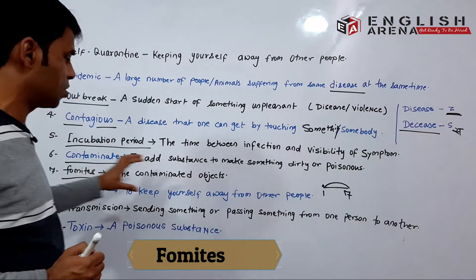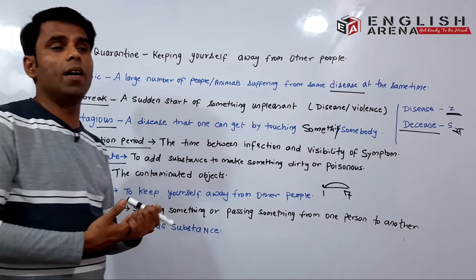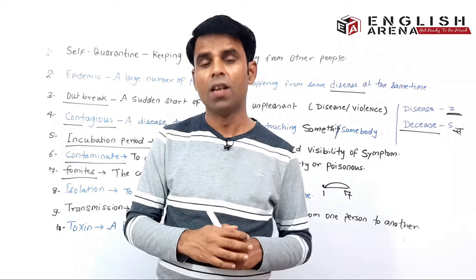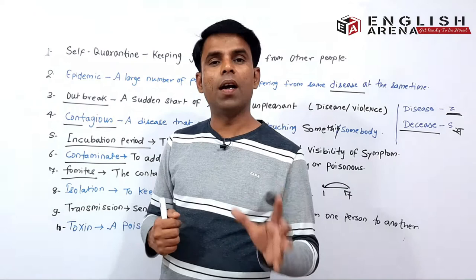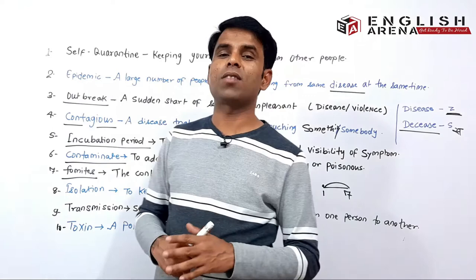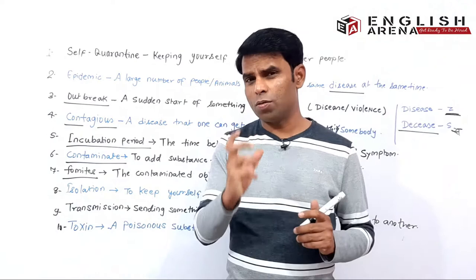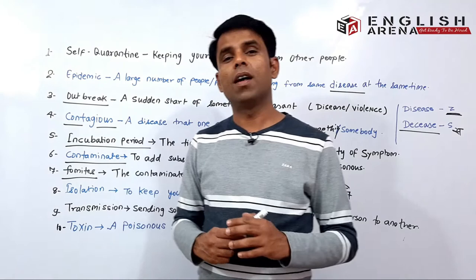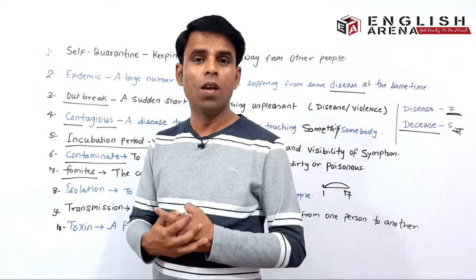The next word is 'fomites.' Fomites means contaminated objects — yaani aisi cheez jis par kisi bhi tarike ka koi sankramak (infection) hua ho. For example, corona ke case mein log kehte hain ki agar kisi vyakti ko corona hai aur wo kisi object ko touch kar leta hai, toh corona virus us par kuch ghanton tak jeevit rehta hai. Toh woh item — woh saari vastuyein jinko us vyakti ne touch kiya hai jis par sankramad hai — they are called 'fomites.' The singular is 'fomite' and the plural is 'fomites.'